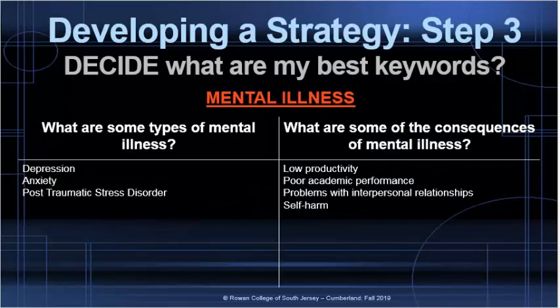Some questions we can ask to help us develop more search terms related to mental illness are: what are some types of mental illness, and what are some of the consequences of mental illness? For types of mental illness, we can identify depression, anxiety, and post-traumatic stress disorder. Some of the consequences we can identify are things like low productivity, poor academic performance, problems with interpersonal relationships, or self-harm.